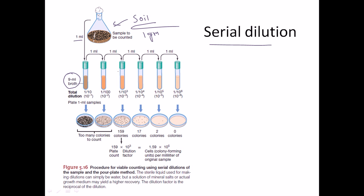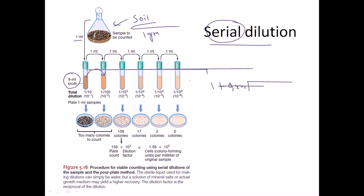To reduce the bacterial load, we use the serial dilution technique. We dilute our sample serially from one container to another. We take one milliliter from the 10 milliliter container and put it into nine milliliters of another nutrient broth. The first container has nine milliliters of broth plus one milliliter of soil, making it a 10 to the power minus 1 concentration.